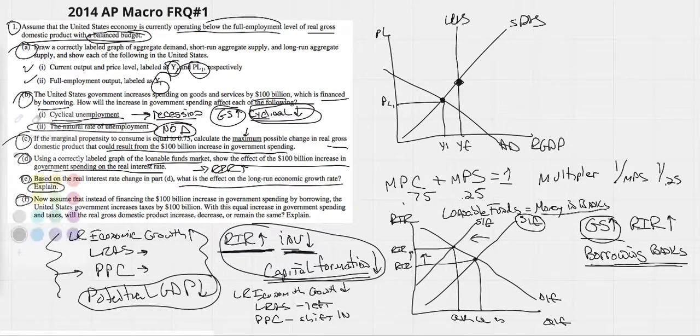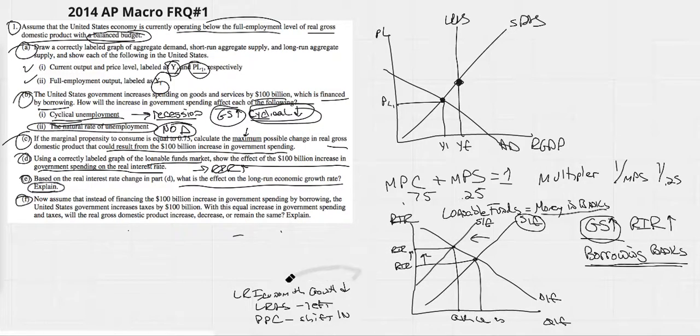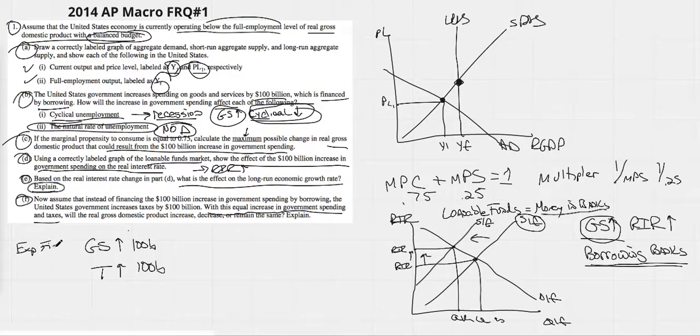Now, assuming that instead of financing the $100 billion increase in government spending by borrowing, the United States government increases taxes by $100 billion. This is a very trickily worded question. Because with the next sentence, it says with this equal increase in government spending and taxes. So you have to be able to read through this and understand that not only is government spending going up by $100 billion, but at the same time, taxes are increasing by $100 billion. Now, government spending going up, as we know, is expansionary fiscal policy. And taxes going up is contractionary fiscal policy. They're both the same numbers. You would think they would counteract each other, but they don't.